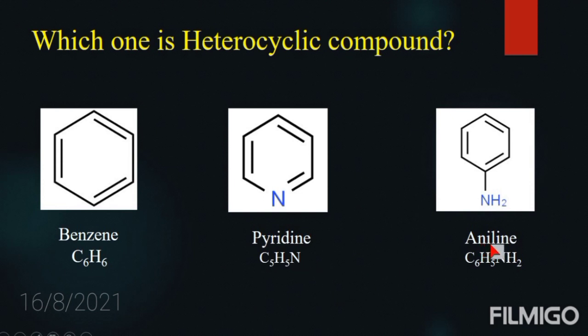The third example is aniline. Its molecular formula is C6H5NH2. The important point to note here is that this compound also has a nitrogen — that is a heteroatom — but it is not a heterocyclic compound because the heteroatom is not present inside the ring. So we can say simply: when a cyclic compound contains at least one element other than carbon within the ring system, then the compound is a heterocyclic compound.